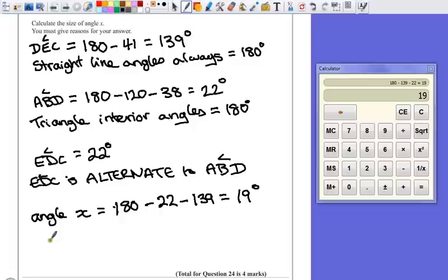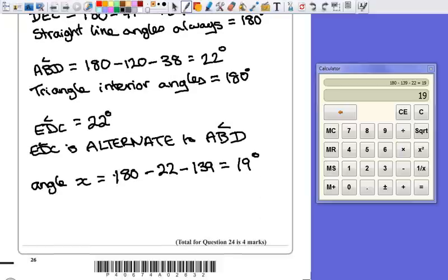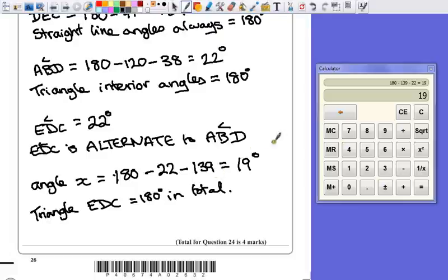And again, the facts that we've used is that, it's the one we've already mentioned here. What's the name of that triangle? EDC. So we've explained all of our answers where they've come from. Each of these will give us a mark because we've explained it and done the correct calculations.